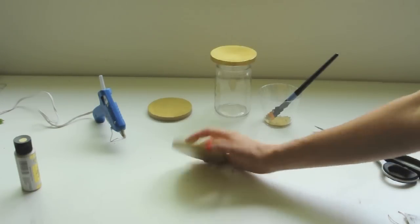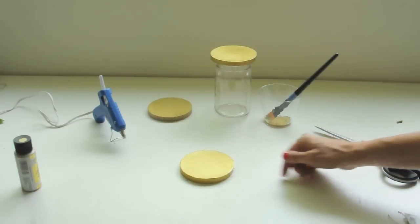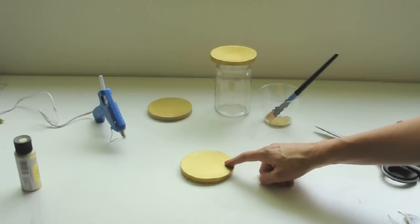After my paint has dried on both sides and on the edge, I'm going to go ahead and glue purple ribbon onto it to put around the neck.